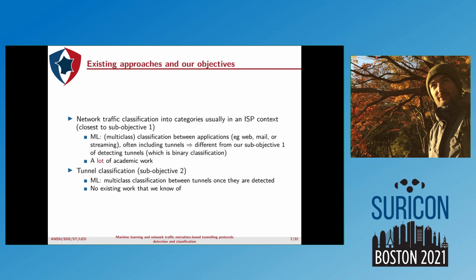I will present every approach close to what we want to do. There is a first topic — network traffic classification into categories — which is usually used in an ISP context, and this is the closest to our Sub-objective 1. In ML terms, you want to classify traffic between applications such as web, mail, or streaming, and this often includes tunnels. This is slightly different from our Sub-objective 1, which is only detecting tunnels — that is binary classification: tunnel or not. Their objective is usually multi-class classification across all possible applications.